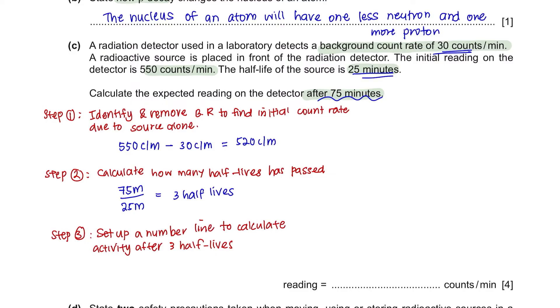The next step would be to set up a number line to calculate the activity after 3 half-lives. So initially it was 520 counts per minute. After 1 half-life it becomes 260. After going through 3 half-lives, you will be left with a count rate of 65 counts per minute and this is the count rate for the source alone.